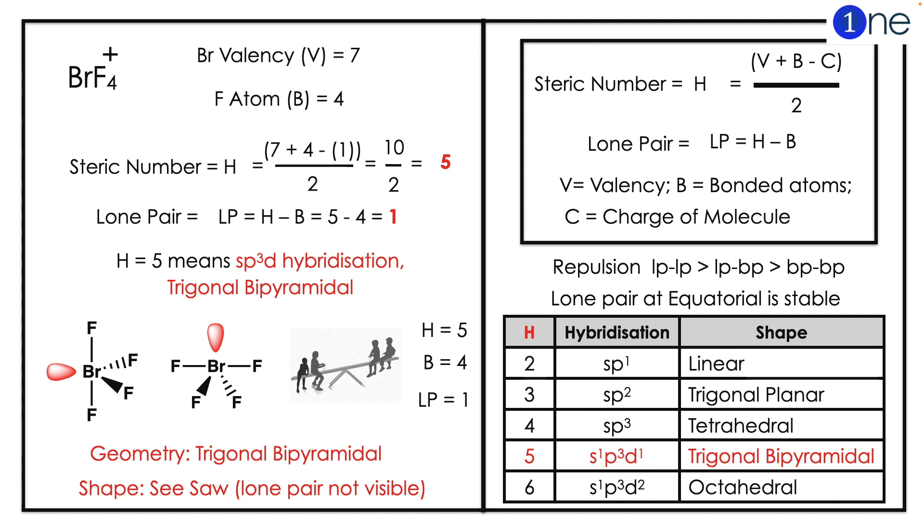You have one lone pair with trigonal bipyramidal, meaning the lone pair occupies equatorial. So you have a seesaw structure. If you look at it clearly in the 3D way, it will be like a seesaw game. So the shape of BrF4+ is seesaw structure.